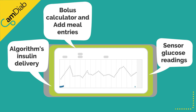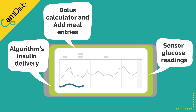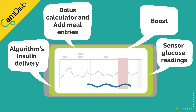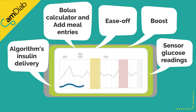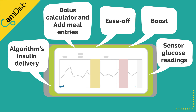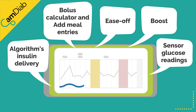If auto mode is not working, the pump's pre-programmed basal will be shown in blue. Times when boost and ease off have been used are also shown. You can pinch or scroll the graph to see more data.